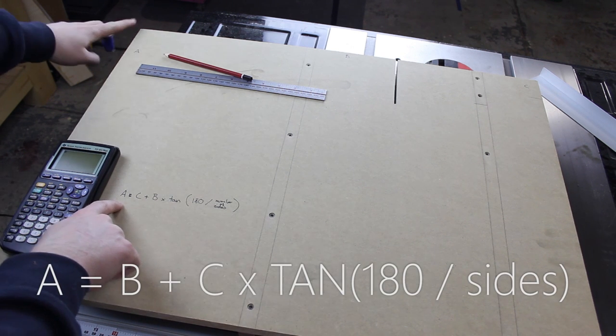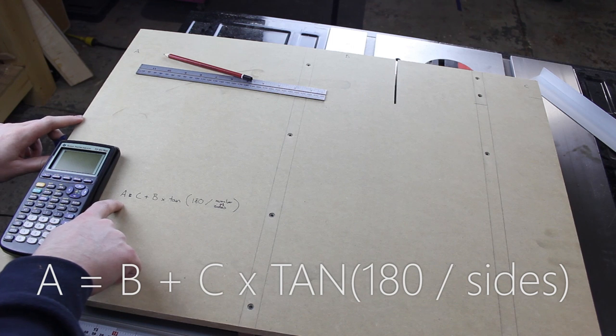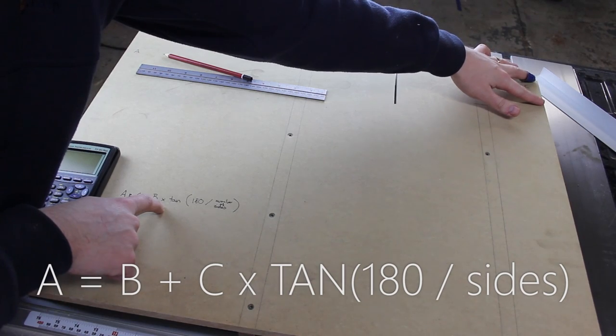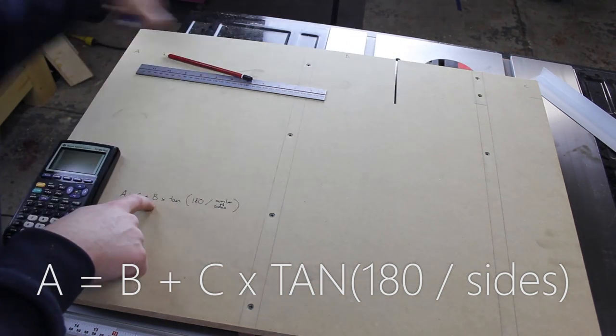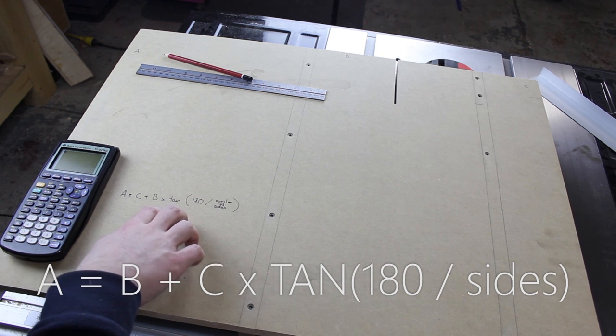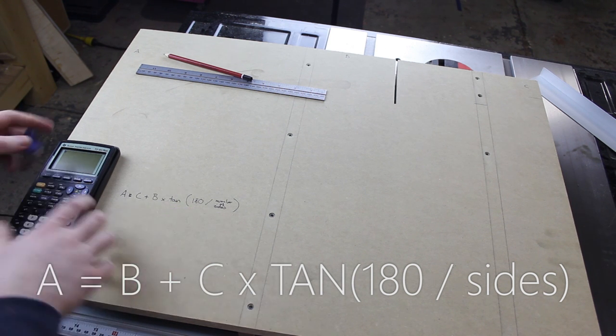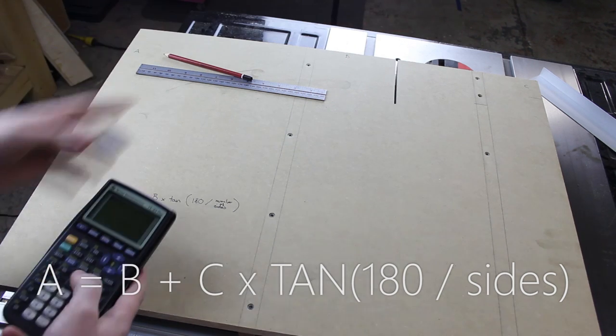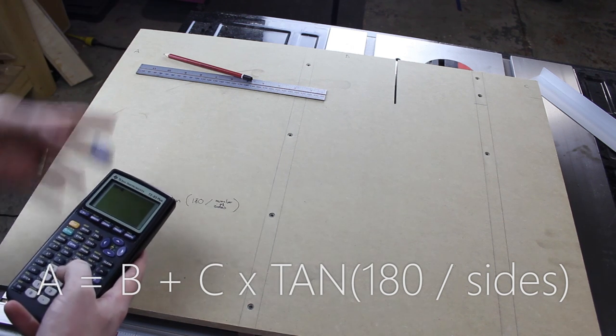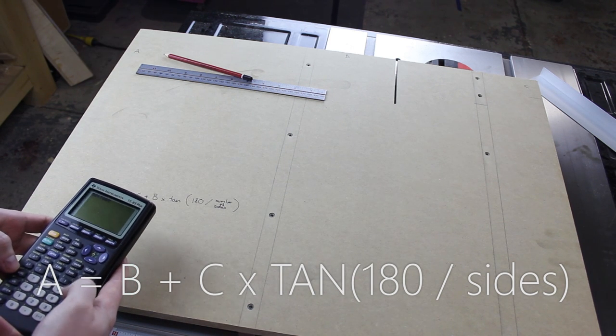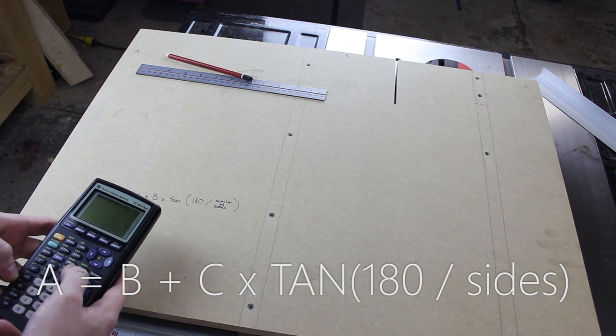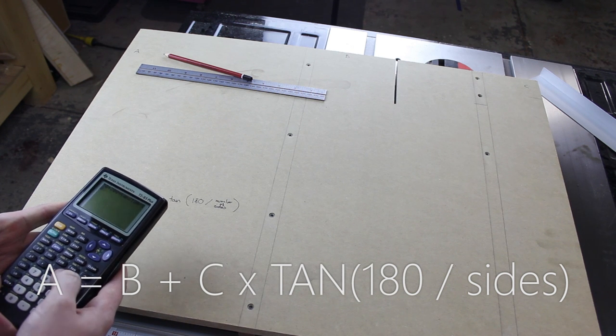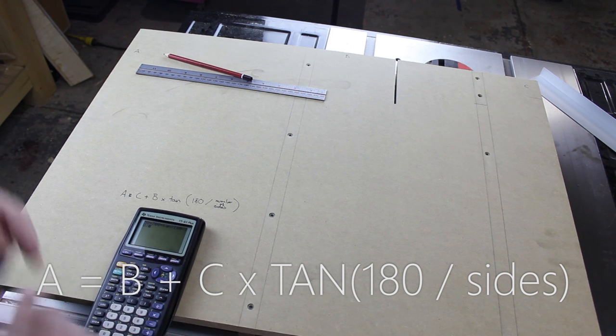The formula is A, which is how far the fence goes down on this side, equals C, which is an arbitrary value here of how far the fence goes down on this side, plus B, which is the length of your sled, times the tangent of 180 divided by the number of sides. So for me I've chosen 50mm or 5cm to go down for C, so that's 50 plus this is 700mm wide times tan(180/10), and I'm going to go 10 sides which is not too many cuts to make and it's a good starting point.